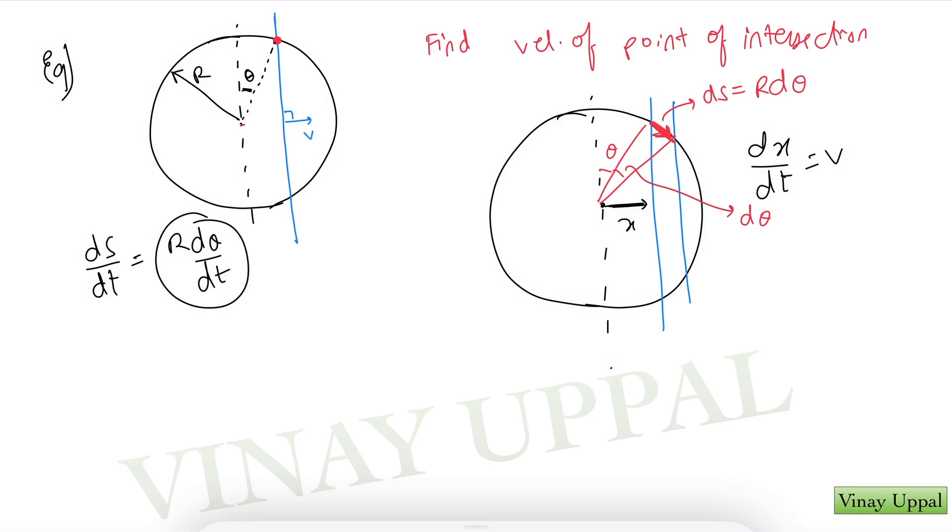Do I have a relation between x and r? So this is x, this is r. Can I say x is r sin theta? And therefore dx by dt, which is v, would be r cos theta d theta by dt. I just differentiate the equation on both sides.